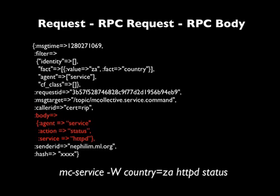We have the body of the request here, and we can see we want to talk to the service agent. We want to get the status action for the service httpd. These are just hashes. I specifically use plain old Ruby hashes in order to keep the door open for using other languages like Perl, Python, C, or whatever. We will use something like YAML to serialize this information into a message. By convention I'm using a hash, but you can use anything — any data that you put in there, even if it's not a standard primitive, even if it's a complex object, something like an ActiveRecord result set — that will travel through mcollective and come out the other side intact.